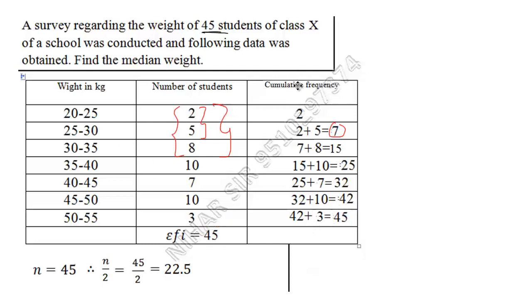So here we can make this cumulative frequency cf very easily. Now next job is to find median class. The way we found mode class in previous lecture, here we will find median class. Now our n upon 2 is 22.5, right?